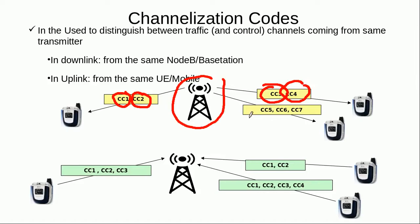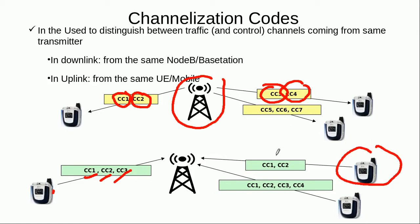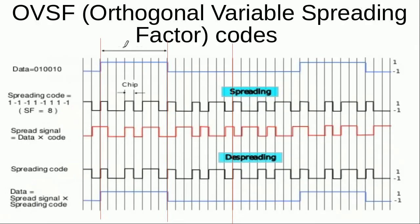As they are coming from the base station, we have seven different codes for these seven different channels. Similarly, in the uplink it's the mobile station that is the transmitter. In that case there are three channels coming from the mobile station to the base station, so we assign channelization code 1 to the first channel, code 2 to the second, and code 3 to the third. Since this mobile is a different transmitter, we can reuse these channelization codes.